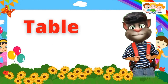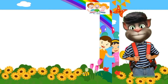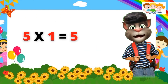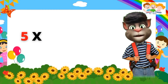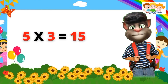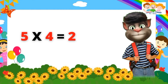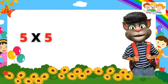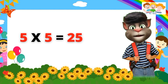Table of Five. Five one's are five. Five two's are ten. Five three's are fifteen. Five four's are twenty. Five five's are twenty-five. Five six's are thirty.